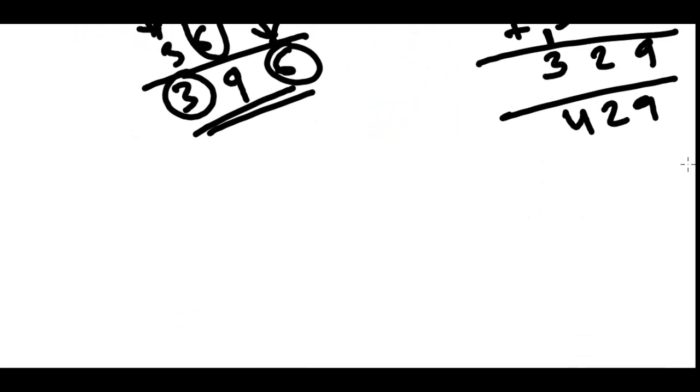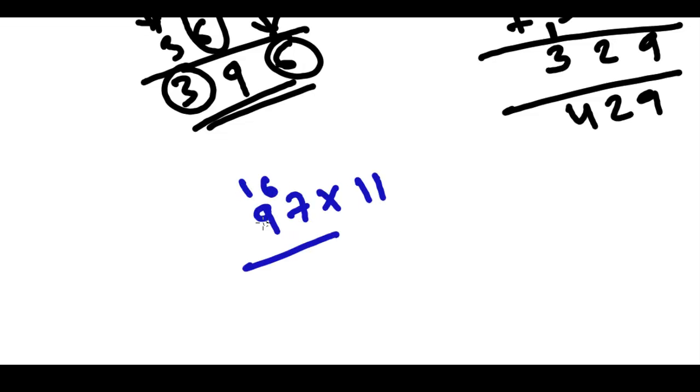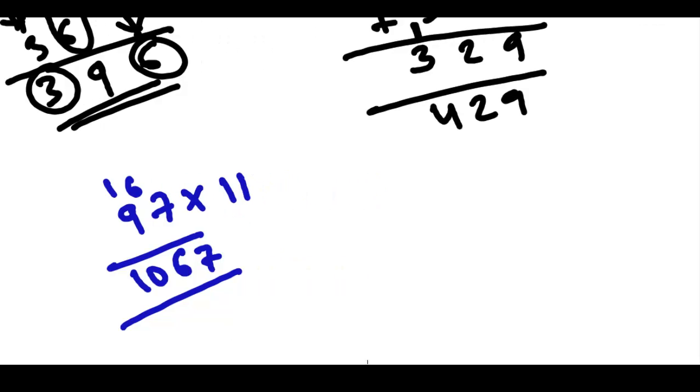Let's take some more examples. Let's say 97 times 11. So 9 plus 7, that is 16. So 1 here, 6 here. 9 plus 1, that is 10. And then the 6 and 7. So 97 times 11 is 1067.